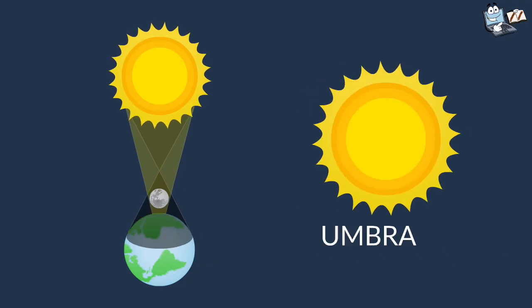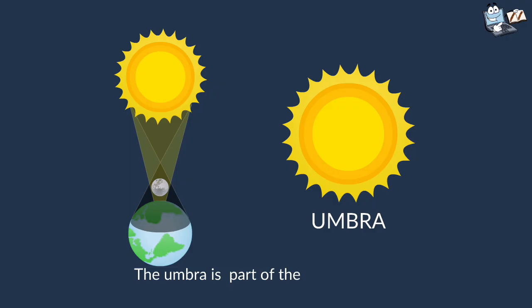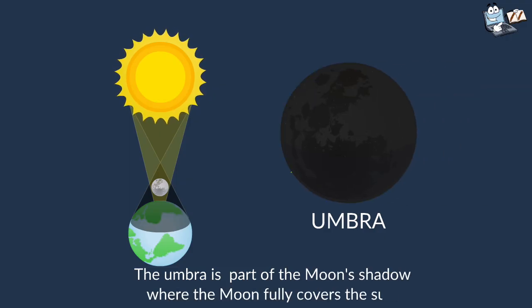Now let's study about Umbra. The Umbra is part of the moon's shadow where the moon fully covers the sun. Sun is not visible in this. Now comes the Antumbra.